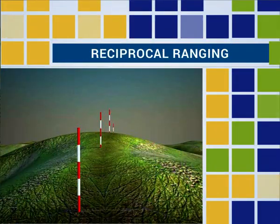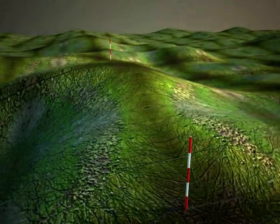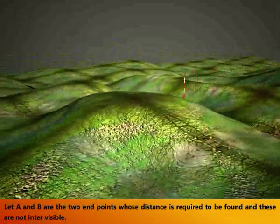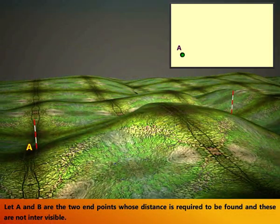Reciprocal Ranging. Let us see about Reciprocal Ranging. Let A and B are the two endpoints whose distance is required to be found and these are not inter-visible.